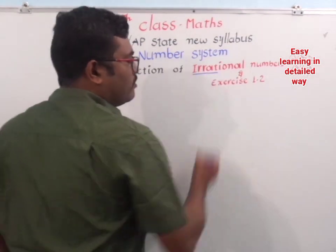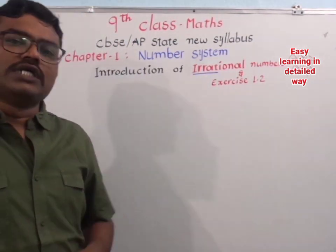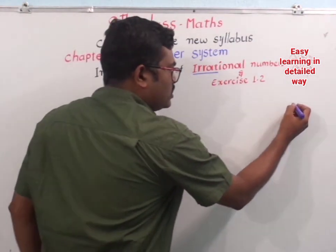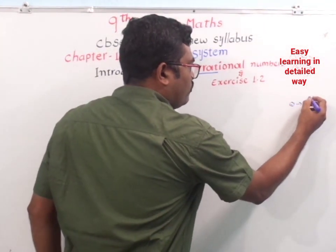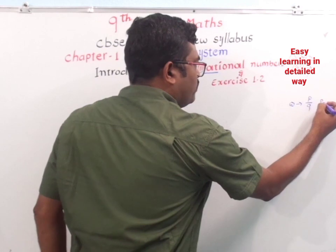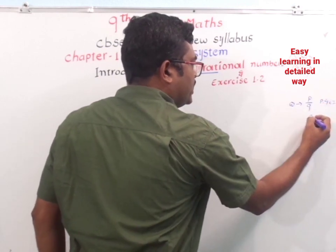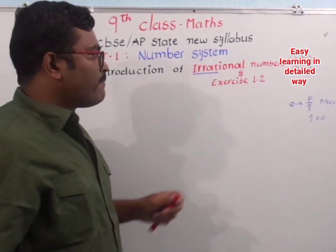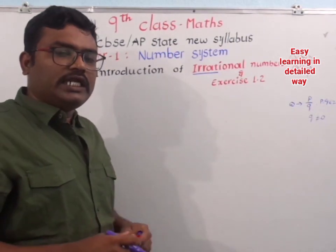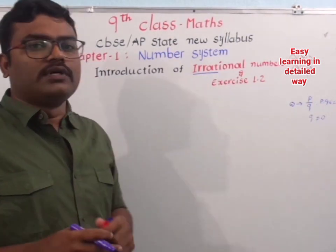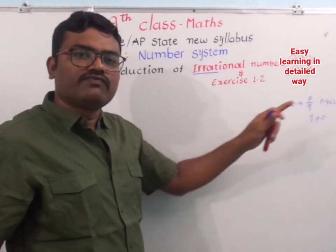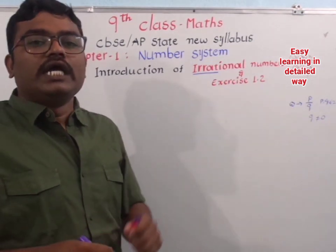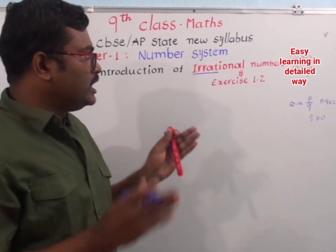Irrational Numbers — what are Irrational Numbers? As I told you in the previous class, Rational Numbers are the numbers which are in the form of P by Q, where P and Q are integers and Q is not equal to 0. Irrational Numbers are those numbers which cannot be expressed in this form, that is, in the form of P by Q. Those numbers are called Irrational Numbers.